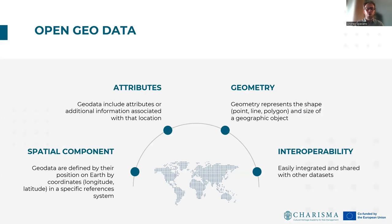Open geodata are a specific type of open data that allow us to contextualize information into a geospatial dimension. The main characteristics that distinguish open geodata are: first, spatial components — geodata are defined by their own position on Earth, by coordinates, longitude and latitude, in a specific reference system. Alternatively, we can also use an address to localize specific points or information in a geographic context. The second characteristic are attributes, because geodata includes attributes or additional information associated with a specific location. Another important characteristic is the geometry, which represents the shape — point, line, or polygon — and the size of a geographic object.